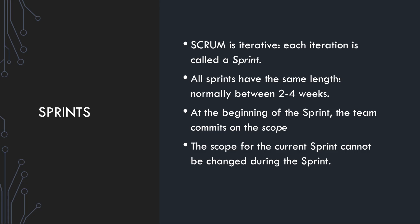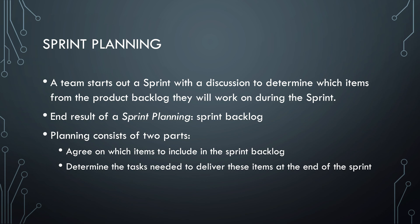Like UP, Scrum is iterative, but iterations are called sprints. Sprints should have the same length, normally somewhere between 2 and 4 weeks. At the beginning of the sprint, the team decides what they're going to work on, which determines the scope that cannot be changed during the sprint. This is called sprint planning — a discussion to determine what items a team will work on. These items come from the product backlog, and the result of sprint planning is a sprint backlog. Next to deciding which items are in the sprint backlog, you also plan the specific tasks needed to deliver those items.